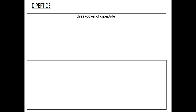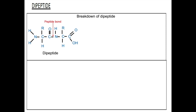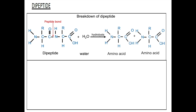To draw the breakdown of dipeptide, you simply reverse the diagram, whereby you draw the dipeptide first and then add water. This is because dipeptide is broken down via hydrolysis. The hydrolysis of a dipeptide molecule will result in the production of two separate amino acid molecules.